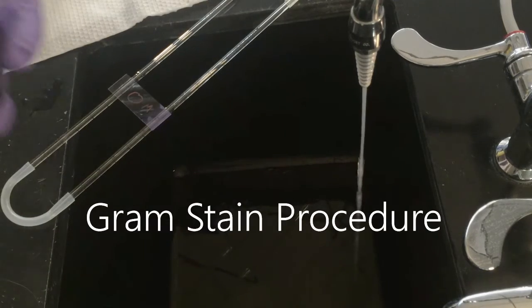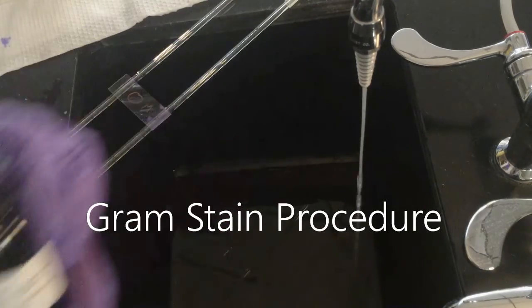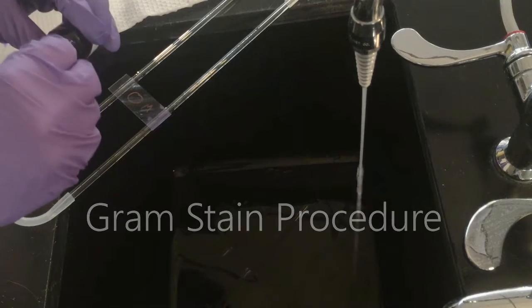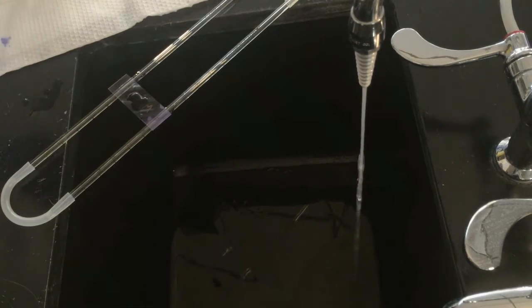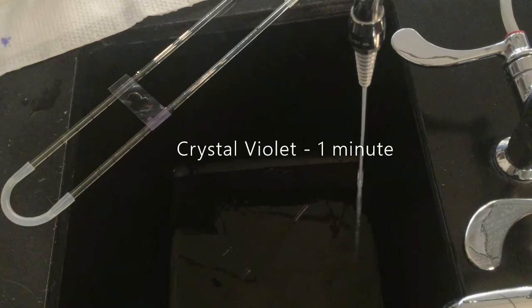The first step is adding the crystal violet. I add the crystal violet to the slide, put it on top of the bacteria, and let it sit there for one minute.